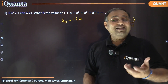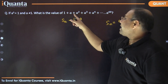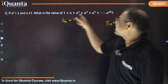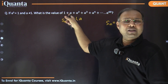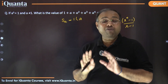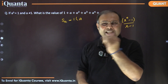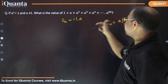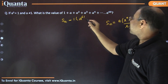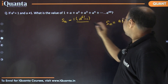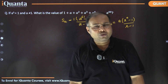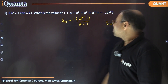You might wonder how we get 61 terms. We have a¹, a², a³ ... up to a⁶⁰ — those are 60 terms — plus the first term 1, which is a⁰. So altogether there are 61 terms. Therefore the sum is: (a⁶¹ − 1) / (a − 1). I hope that's clear — there should be no difficulty.